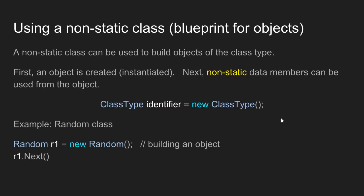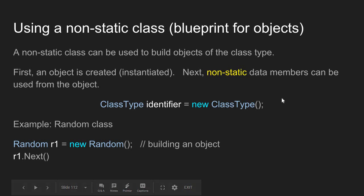When we use a non-static class, non-static classes are meant to build objects from. So the first thing we are going to do is build a new object of the type of the class. Then we can use all of the non-static data members from that object.